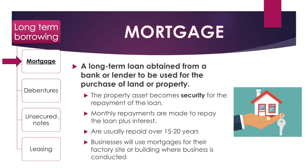A mortgage is a very common term and most people get confused — they just think it's a long-term loan. But the distinguishing factor of a mortgage is that the loan is used for the purchase of land or property. That's why the picture here has a house on it. When you take out a mortgage, the actual asset you use the loan to buy becomes a security for the repayment of the loan.